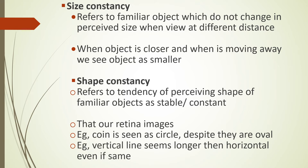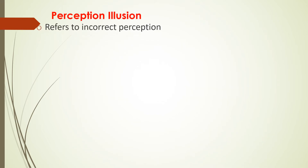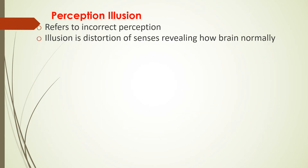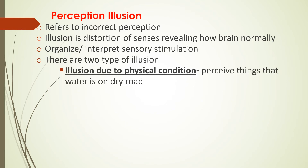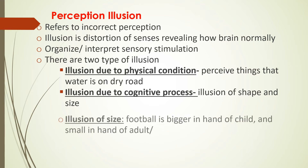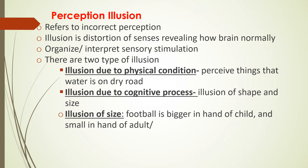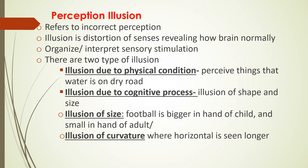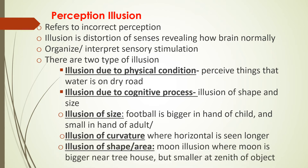Shape constancy refers to the tendency to perceive the shape of familiar objects as stable and constant despite changes in retinal images — for example, a coin is circular even though it appears oval at an angle. A vertical line seems longer than a horizontal line even if they are the same length. Perceptual illusion refers to incorrect perception — it is a distortion of the senses revealing how the brain normally organizes sensory stimulation. There are two types: illusion due to physical conditions (e.g., perceiving water on a dry road) and illusion due to cognitive processes, such as size illusion (a football looks bigger in a child's hand than an adult's), illusion of curvature, and illusion of shape and area (e.g., the moon appears bigger near a treehouse but smaller against open sky).